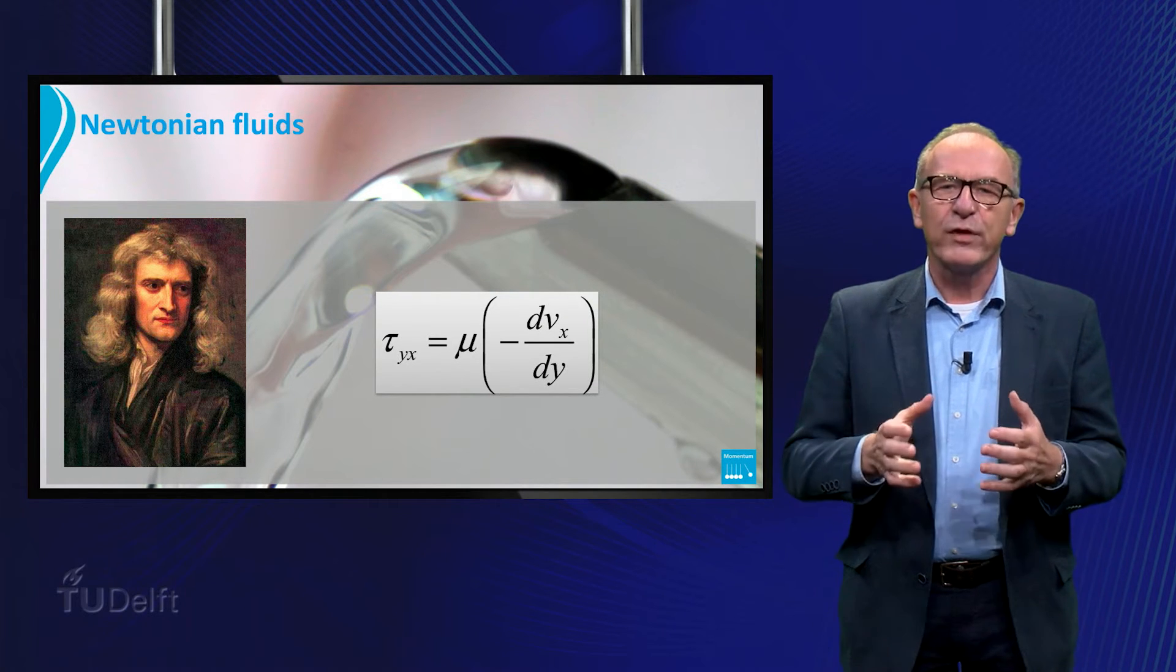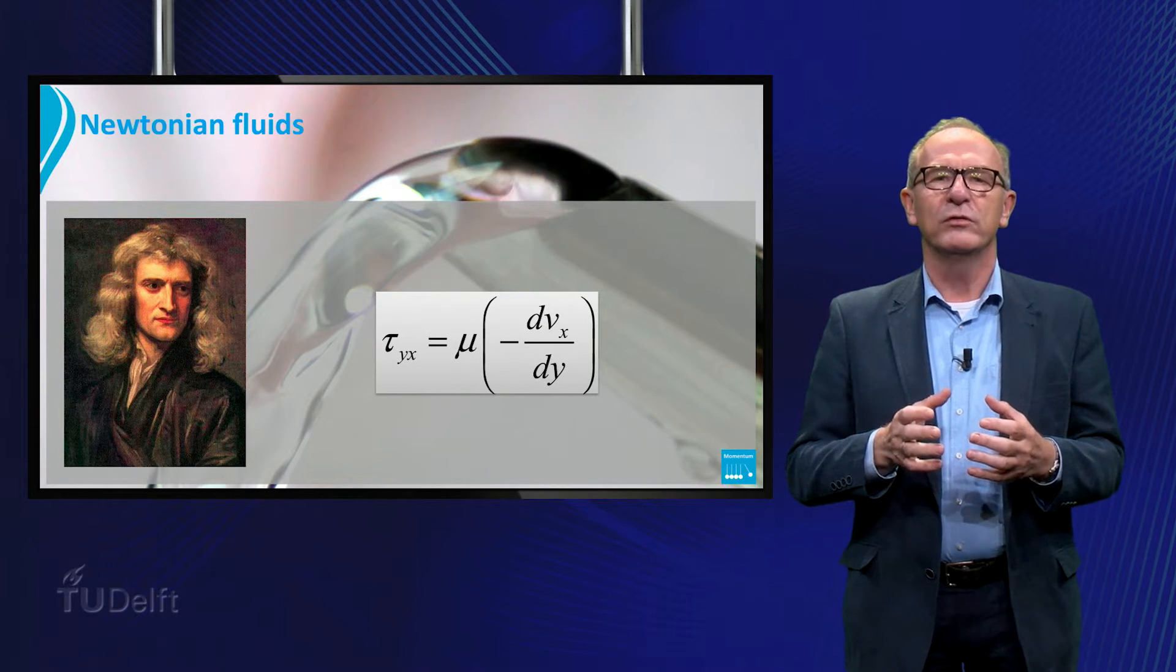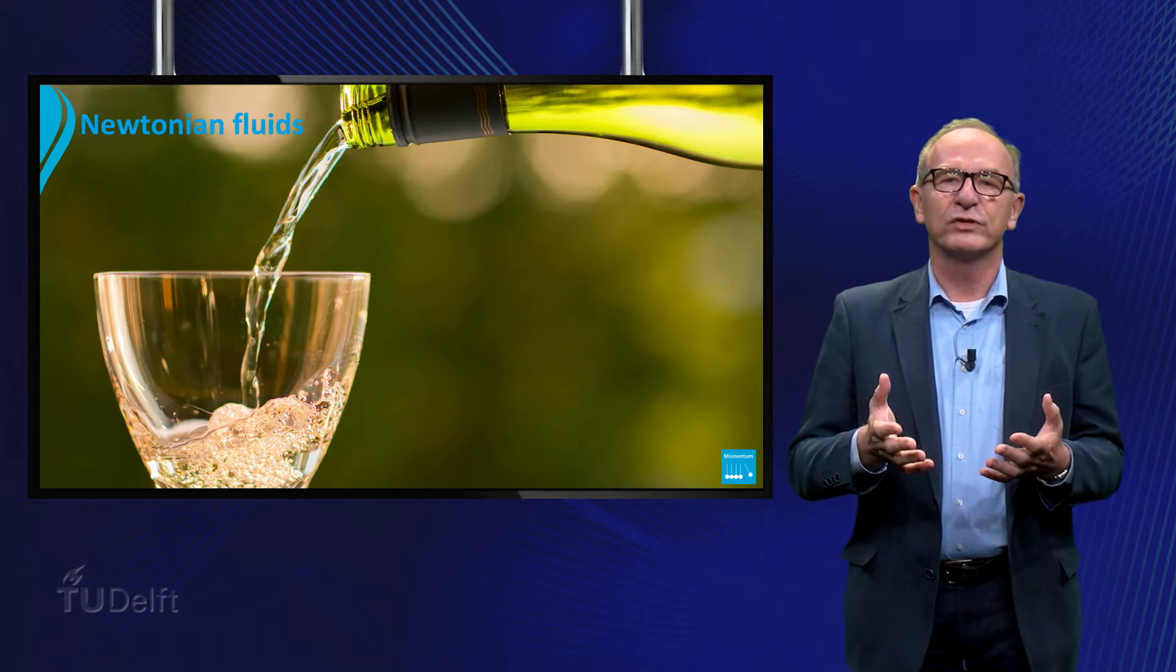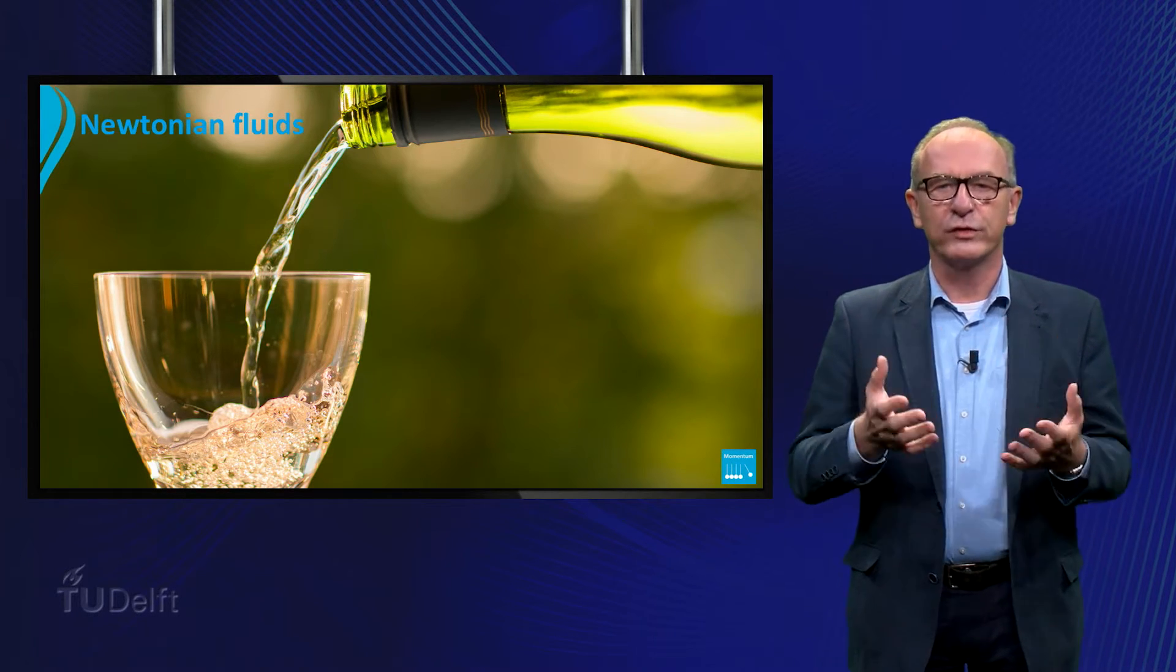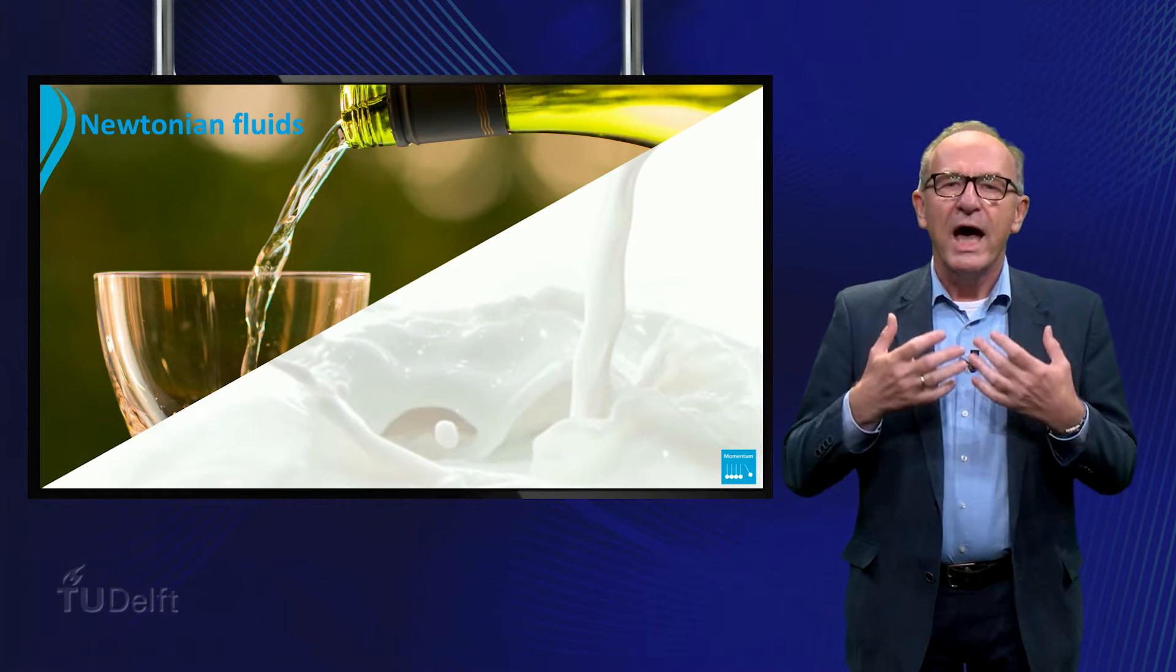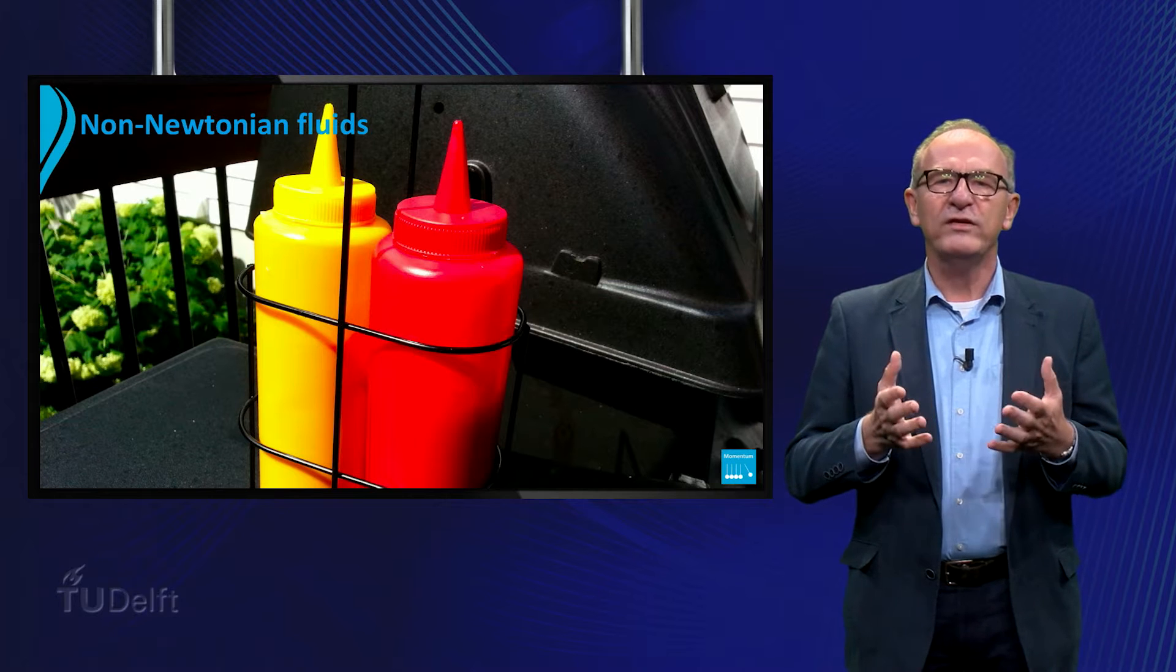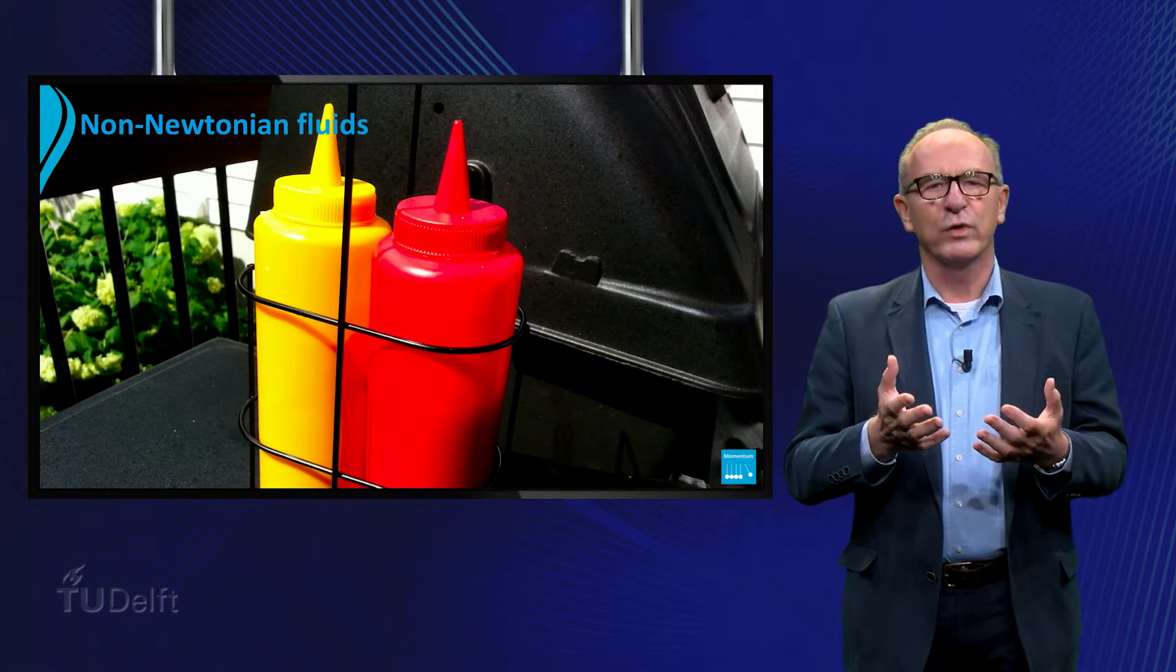Newtonian fluids are characterized by a constant viscosity mu in a flow field of constant temperature. Typical examples of Newtonian fluids are flows of water and milk. However many fluids are so-called non-Newtonian fluids. The question is what makes them different from the Newtonian one?